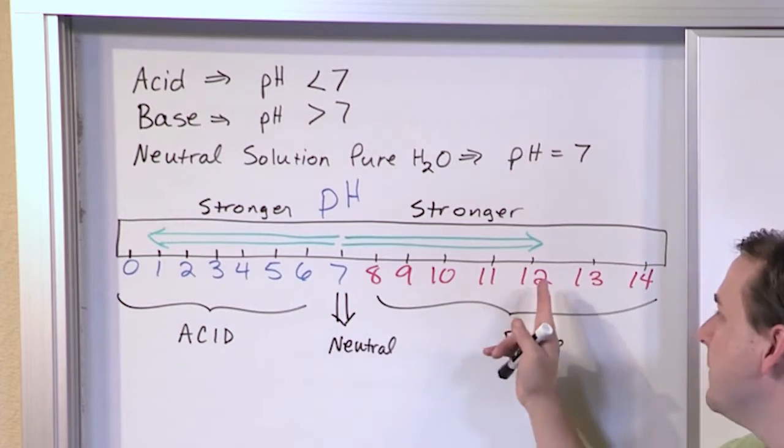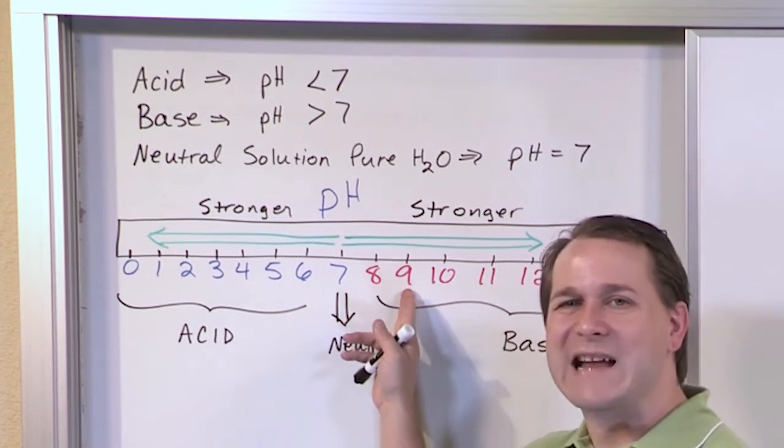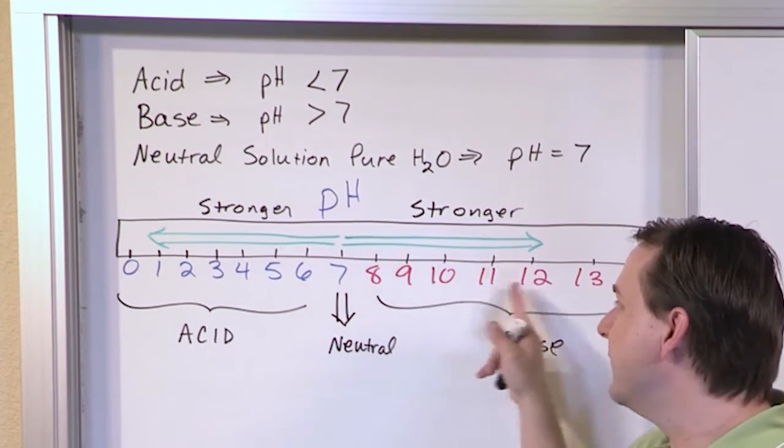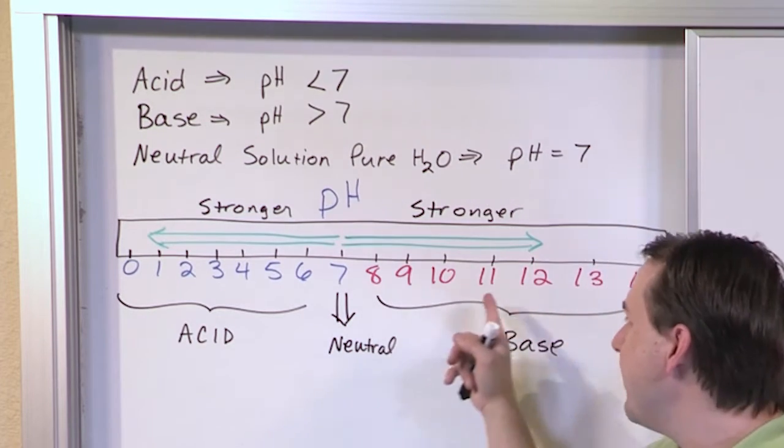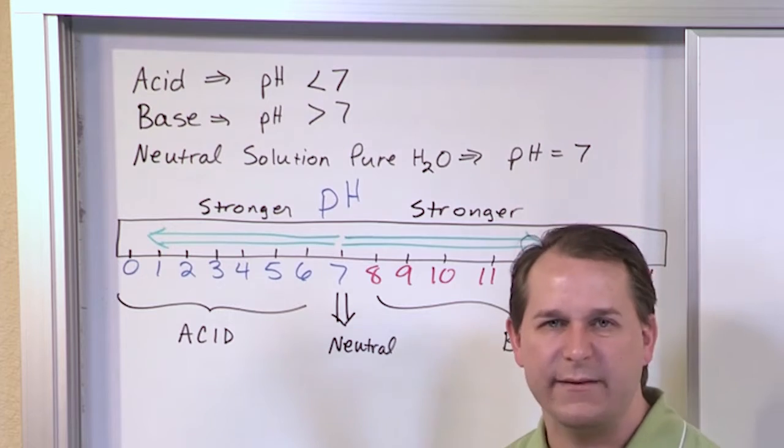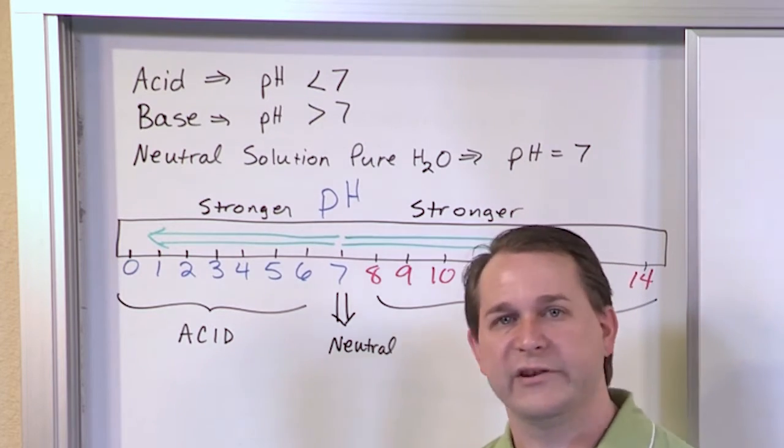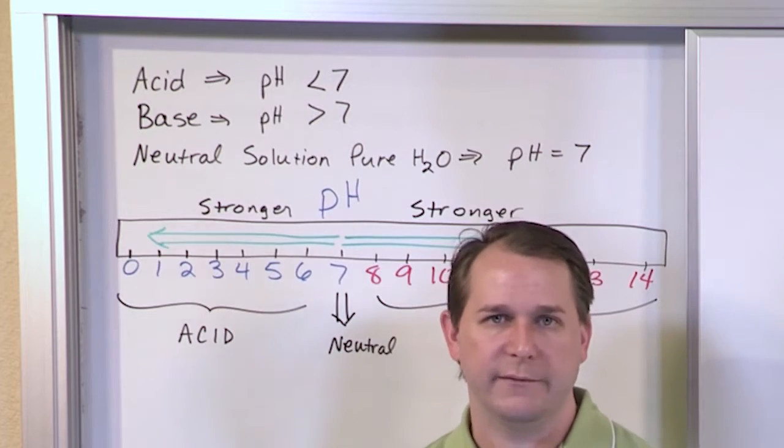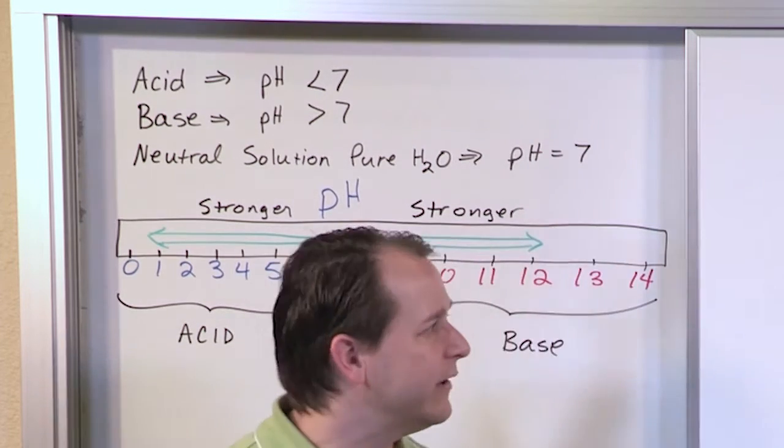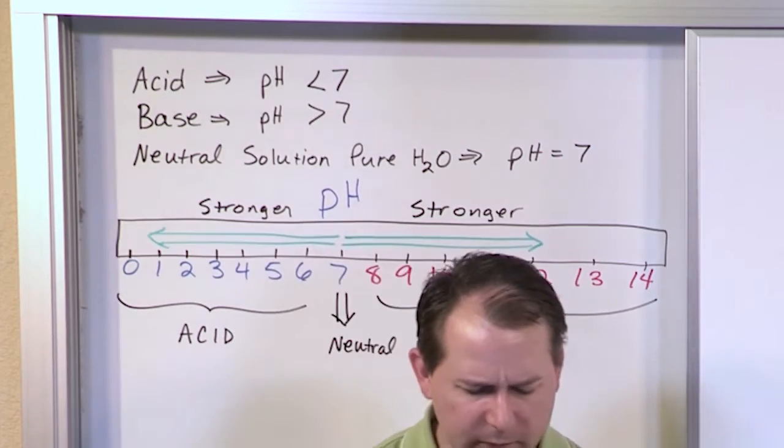The exact same thing holds true on the base side. If I have a pH of 9.5, because you can have pHs in between these numbers, right? pH of 9.5, and then I have a pH of 12.7, which base am I going to be a little more scared of? It's going to be the one with a pH of 12.7, because that one is a stronger base.